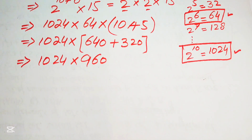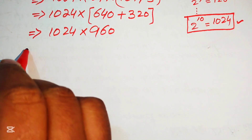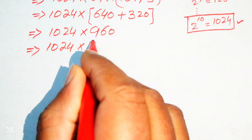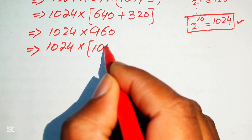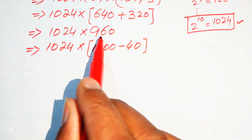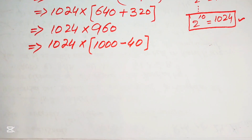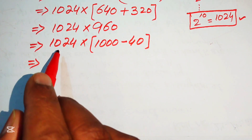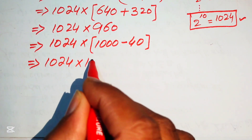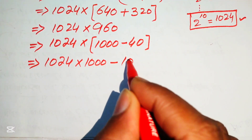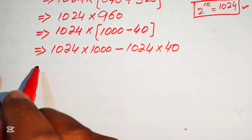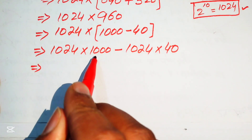We rewrite 960 as 1000 minus 40. Then distributing 1024 across both terms gives 1024 multiplied by 1000, minus 1024 multiplied by 40.